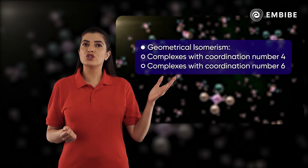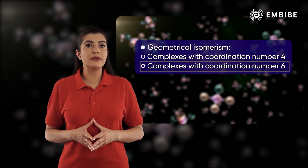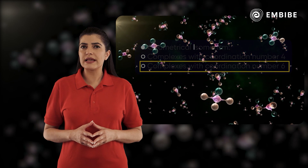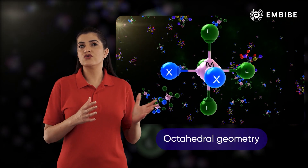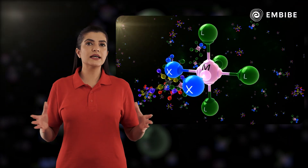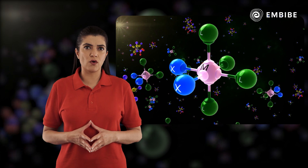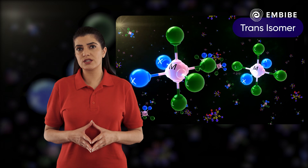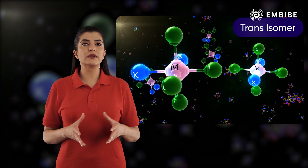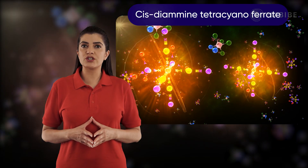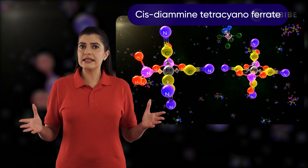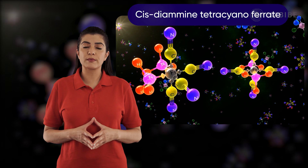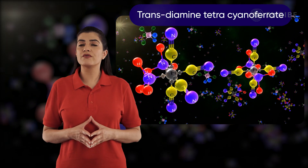We shall now discuss geometrical isomerism in complexes with a coordination number of six. These complexes possess an octahedral geometry. Consider the complex mx2l4. The two x ligands may be oriented either cis or trans to each other. For example, in cis-diaminetetracyanoferrate, the identical ligands NH3 are situated at adjacent positions, while in trans-diaminetetracyanoferrate, the NH3 ligands are situated at opposite positions.